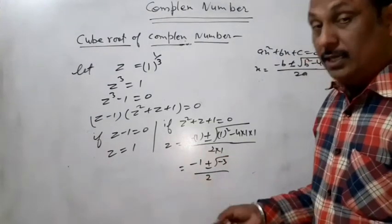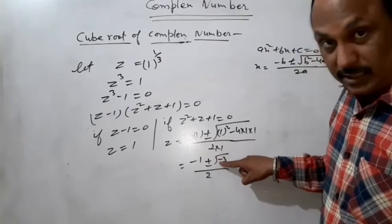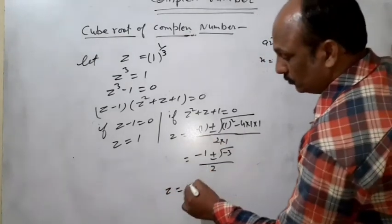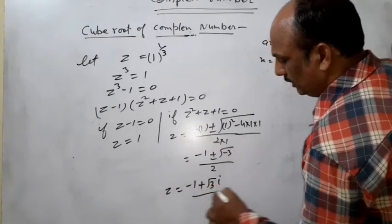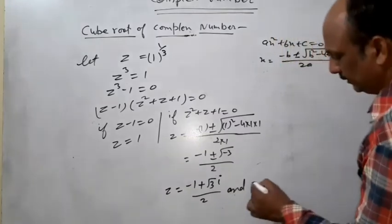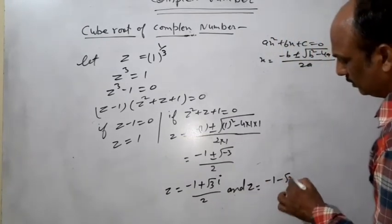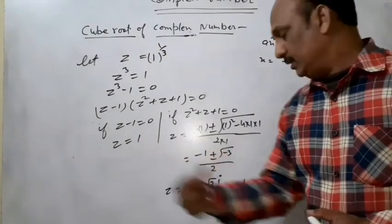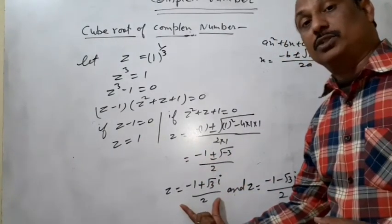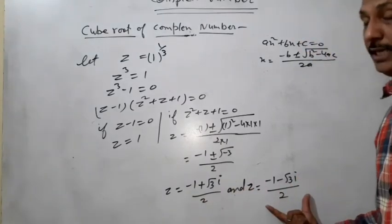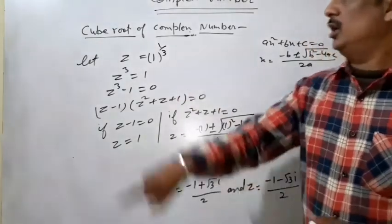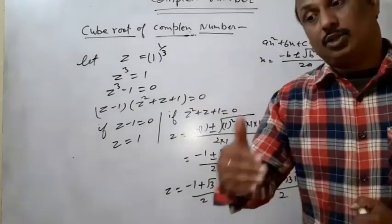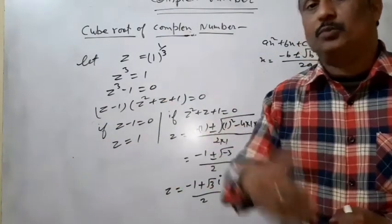As we know, √(-1) = iota, so z = (-1 + √3·i) / 2 and z = (-1 - √3·i) / 2. So the three cube roots of unity are: z = 1, z = (-1 + √3·i) / 2, and z = (-1 - √3·i) / 2.